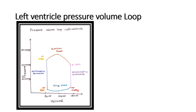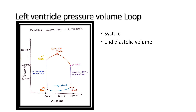The mitral valve is closed and the aortic valve is also closed, so it first enters the isovolumetric contraction phase, where pressure steeply increases — around 80 mmHg — and then it enters the ejection phase. During the rapid ejection phase, pressure increases up to 120 mmHg.